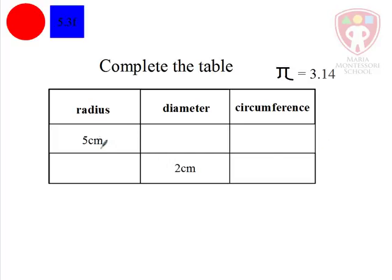Let's start from radius to diameter. We know that 2 radii give us a diameter, and so if this is 5 centimeters, then this will be 10 centimeters.